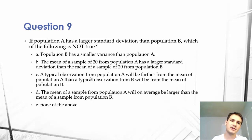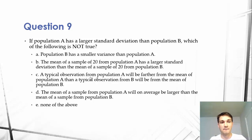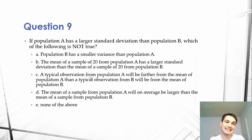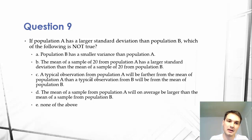C: A typical observation from population A will be farther from the mean of population A than a typical observation from B will be from the mean of population B. D: The mean of a sample from population A will on average be larger than the mean of a sample from population B.